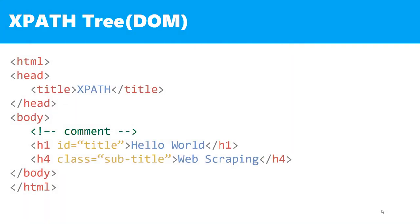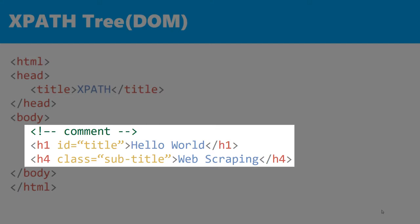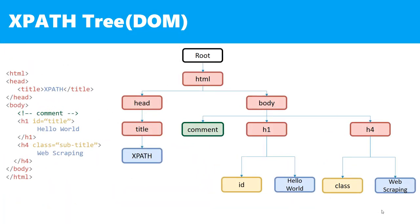Let's take an example to illustrate everything. We have this HTML document with a comment node, an h1 node with id set to 'title' and text node set to 'hello world', then an h4 node with a class attribute set to 'sub-title' and text node set to 'web scraping'. This HTML document is seen by XPath as a tree, similar to the family tree, but this one is often called the DOM, or Document Object Model, that contains all kinds of nodes that are part of the HTML page.